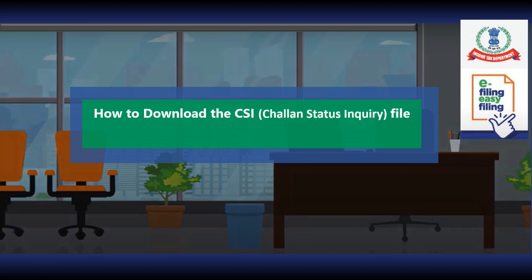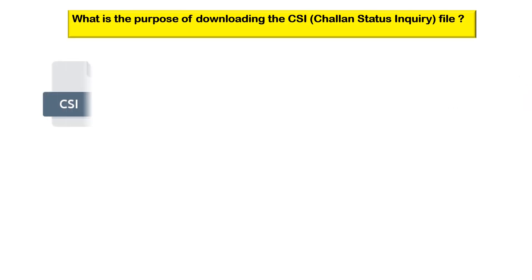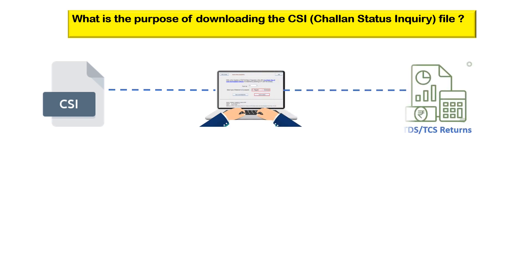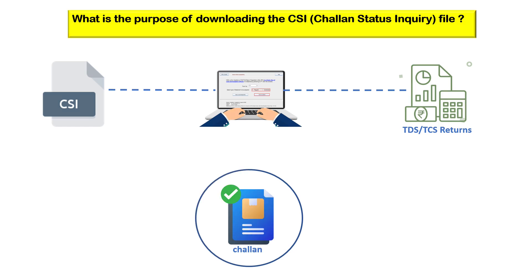This video is on how to download the CSI file. CSI, or the Chalan Status Inquiry file, needs to be uploaded in the return preparation utility for filing of TDS or TCS returns. It helps in validating the Chalan during return preparation.